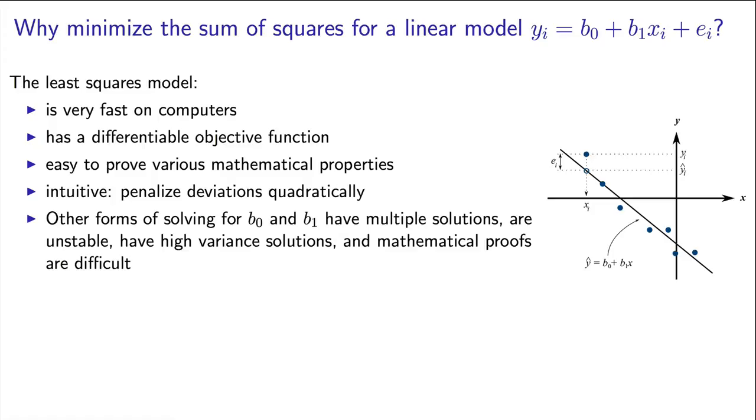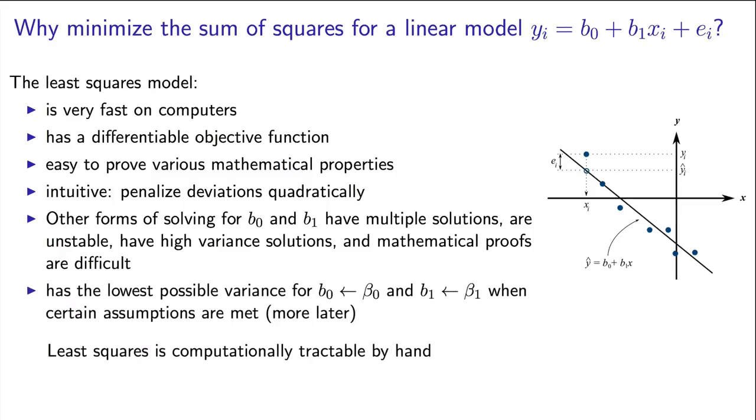Mathematical proofs regarding some of these other methods are difficult to show. And lastly, there's an important statistical reason. The estimated parameters from the model, b0 for beta0 and b1 for beta1, have the lowest variance possible when certain assumptions are met. We'll see that coming up later again in this module.